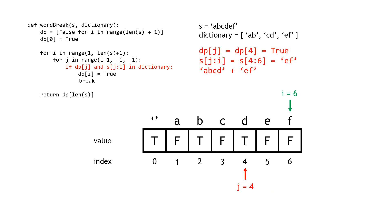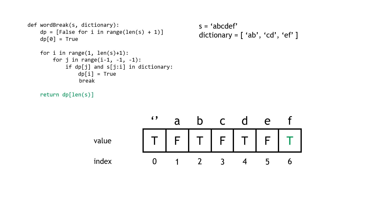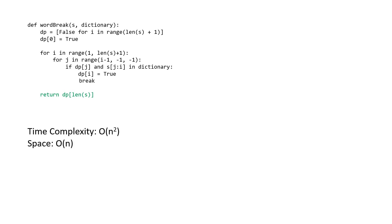For I equals six, we cannot form left side ABCDE so we move on. But then we can form left side ABCD, and the right side is EF which is in our dictionary. So we mark this position as true and break out of the J loop. Since we're on the last iteration of the I loop, we exit that as well. Finally, DP[len(S)] is returned, which is true — the correct answer. The time complexity is O(N²) due to the nested loops, and we use O(N) extra space for the DP table.